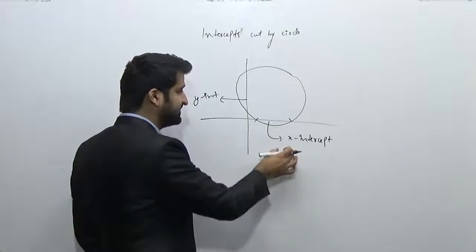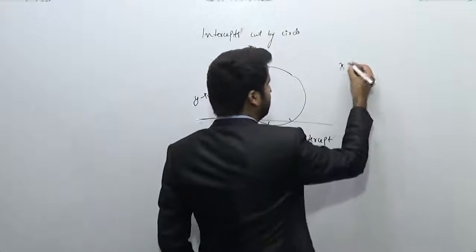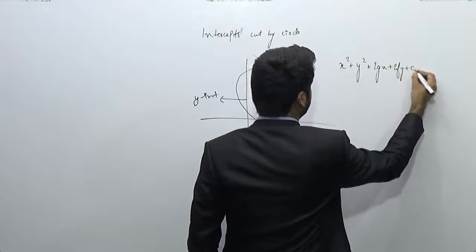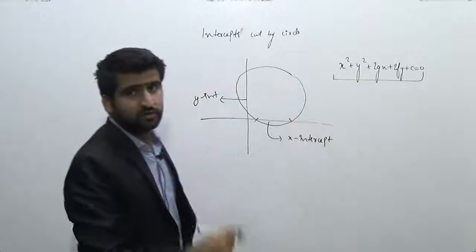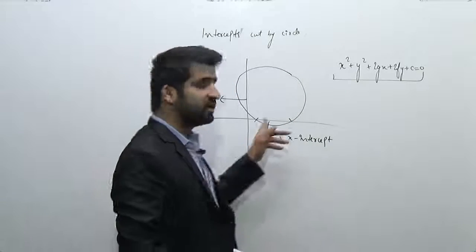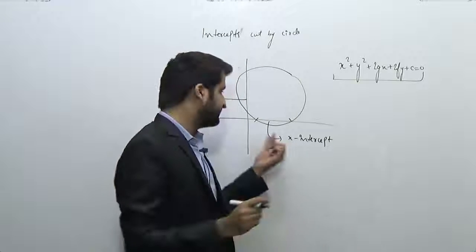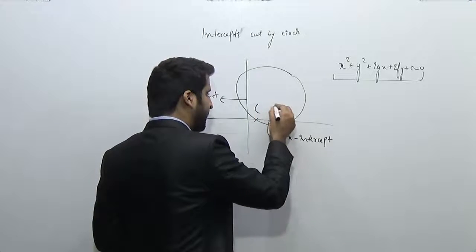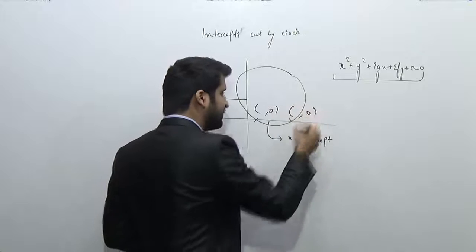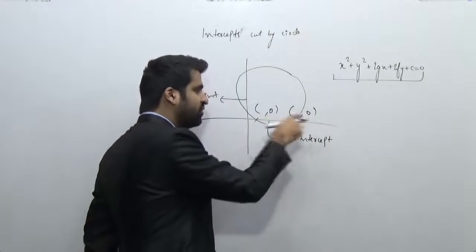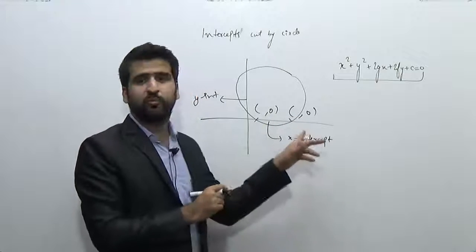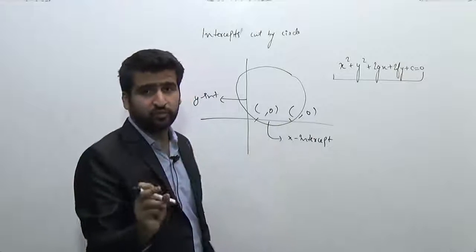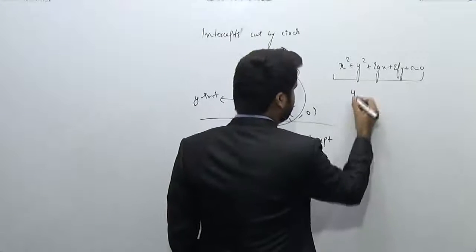So now I have to find the value of the x-intercept as well as the y-intercept. Let's say that x² + y² + 2gx + 2fy + c = 0. This is the standard general equation of the circle. Now I know that if the circle is intersecting the x-axis, the points where it is intersecting the x-axis can be found by putting the value of y = 0 into this equation, since both points have the common characteristic that their y-coordinate is equal to 0.